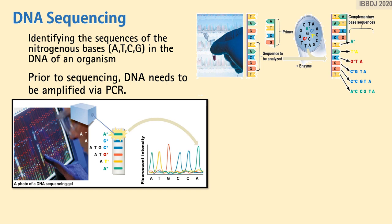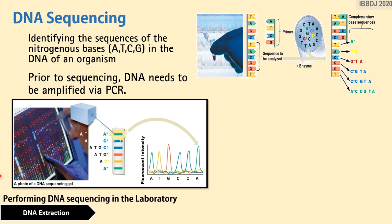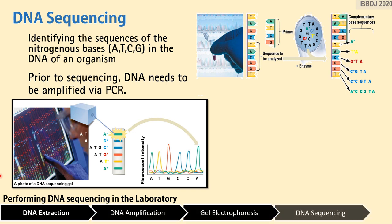DNA sequencing is a method used to identify the nitrogenous bases of a sample. The genetic sequence of A, T, C, and G allow scientists to identify segments in DNA that carry regulatory instructions and highlight changes in a gene that may cause disorders and illnesses. Prior to decoding the bases, the DNA sample must first undergo preparation: DNA extraction, DNA amplification, gel electrophoresis, and DNA sequencing.